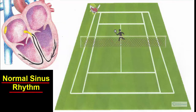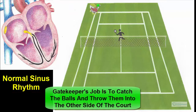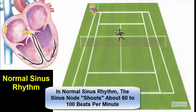I start by showing a single ball machine here. This represents the sinoatrial node. The gatekeeper's job is to receive the ball from the machine, look at the other court to make sure things are okay, and then throw the ball in. Normal sinus rhythm is represented by the ball machine shooting about 80 balls per minute at the person at the net. In this case, the gatekeeper is quite good at grabbing the ball, checking, and throwing.